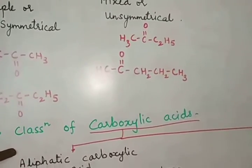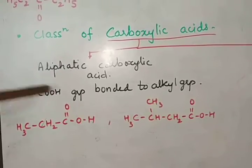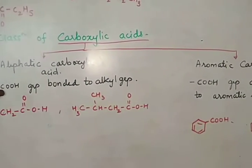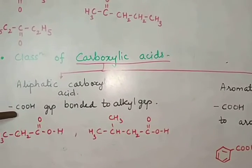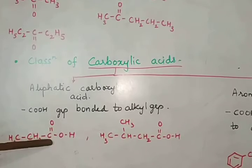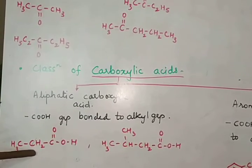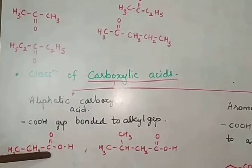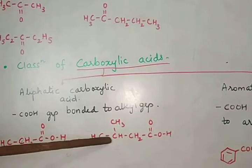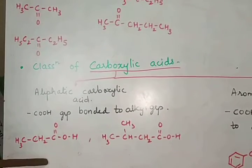Carboxylic acids are classified as aliphatic carboxylic acids and aromatic carboxylic acids. In aliphatic carboxylic acids, the COOH group — the carboxyl group — is directly bonded to an alkyl group. Examples include structures where an R group such as CH₂-CH(CH₃)-CH₃ is attached to the COOH group.